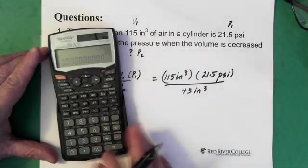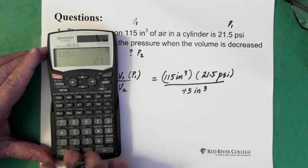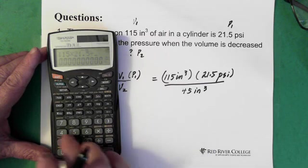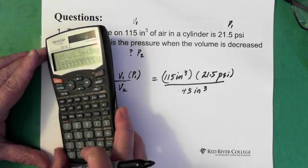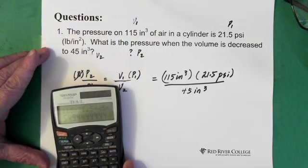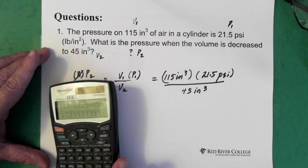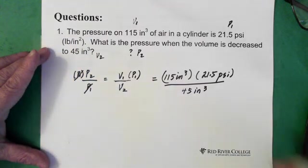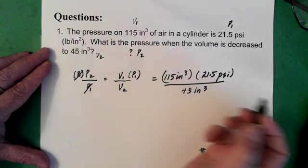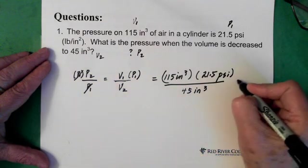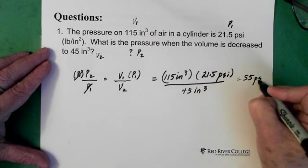So we end up with 115 times 21.5 divided by 45 equals 54.9, 2 sig figs. So let's go with 55. So we end up with 55 and it's psi.